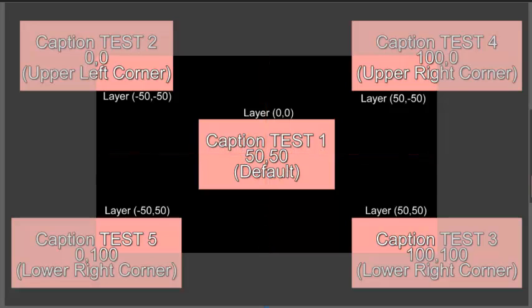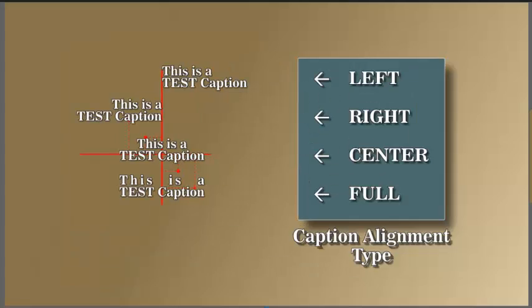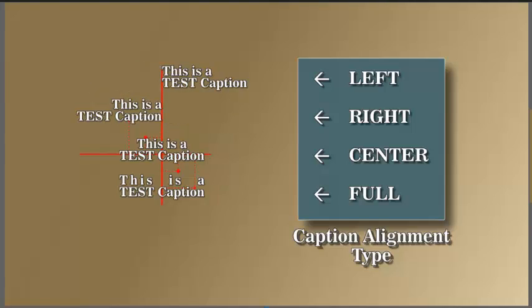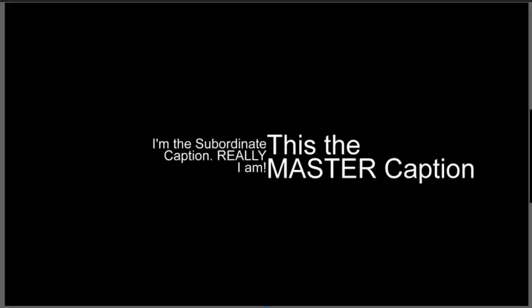Another thing that's different is alignment. Captions have an alignment feature that layers don't have — you have left, right, center, and full, where full is just a variation on center. If you have two captions with the exact same screen location but different alignment, they could appear offset from each other. An alignment choice shifts the entire caption left or right based on what you've chosen, but that doesn't change the center of the layer — it just changes the alignment.